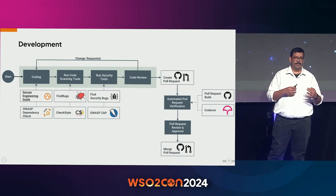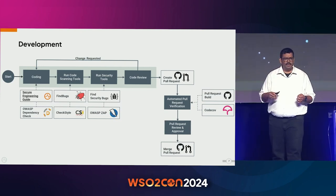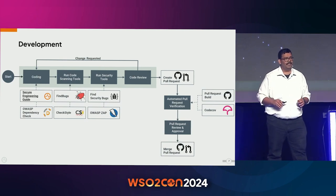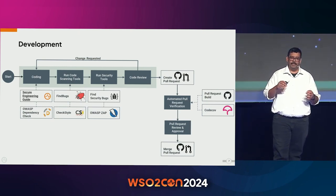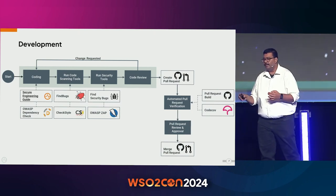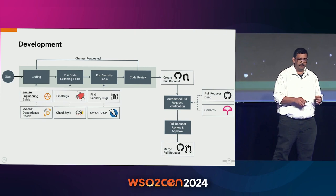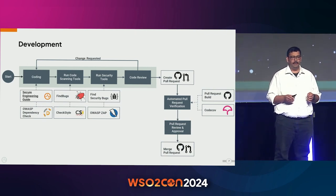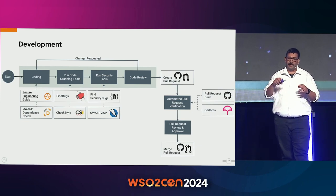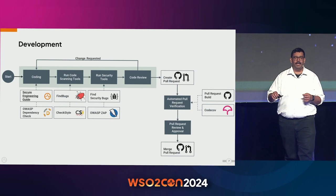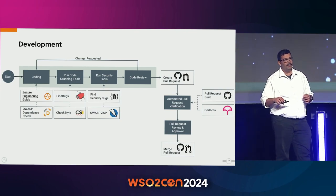Once a feature is at a proper level, developers create a pull request. In WSO2, we follow something called review-then-commit — we don't push code directly into the repository. We create a pull request, and there are automations around it: a build happens, unit tests get executed. We use Codecov, a GitHub plugin that analyzes code coverage. Another developer with commit access has to review and approve the pull request, and only after that approval does it get merged into the codebase.